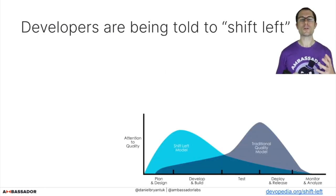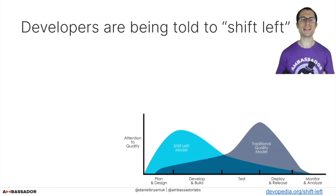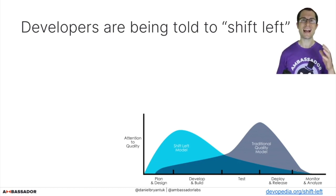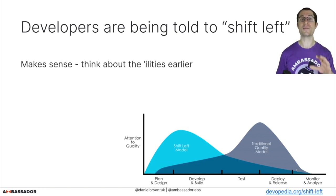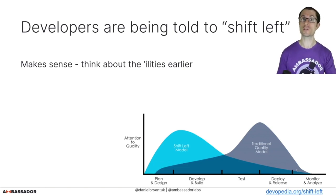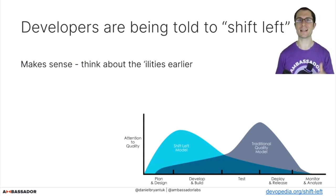We're being told increasingly to shift left as developers, but this is not a new thing. I started my career with Java and JavaScript development back in 2001-2002. We were being asked then to think about the 'ilities' early on in the process — we used to call them non-functional requirements, though a better name is cross-functional requirements: things like reliability, scalability, security, all that good stuff.